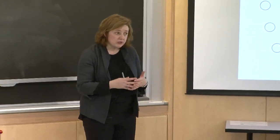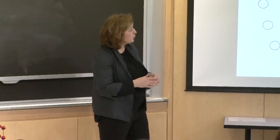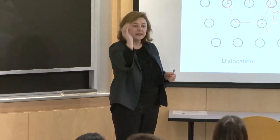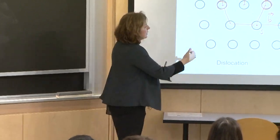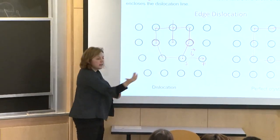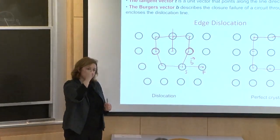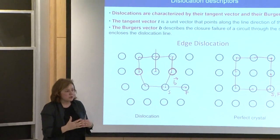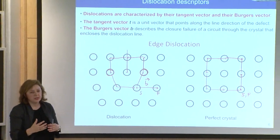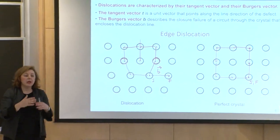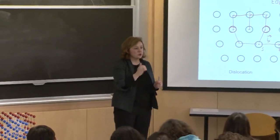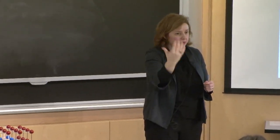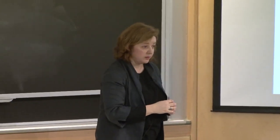There are certain conventions introduced here. First, you have to arbitrarily choose the direction of the dislocation, and then you make the right-hand circle. If you assume this is the dislocation line, then the circle we are making is right-hand. Different textbooks might use different conventions, but the main idea is that once you choose what the dislocation line is, you make this right-hand circle and figure out the Burgers vector.